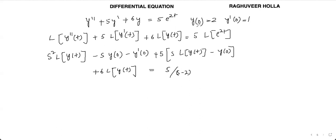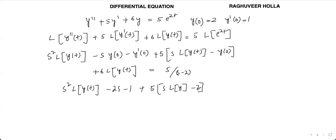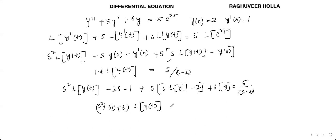Substituting the initial conditions y(0) = 2 and y'(0) = 1 and simplifying: [s²L{y} - 2s - 1] + 5[sL{y} - 2] + 6L{y} = 5/(s-2). Collecting terms: (s² + 5s + 6)·L{y} = 5/(s-2) + 2s + 11.